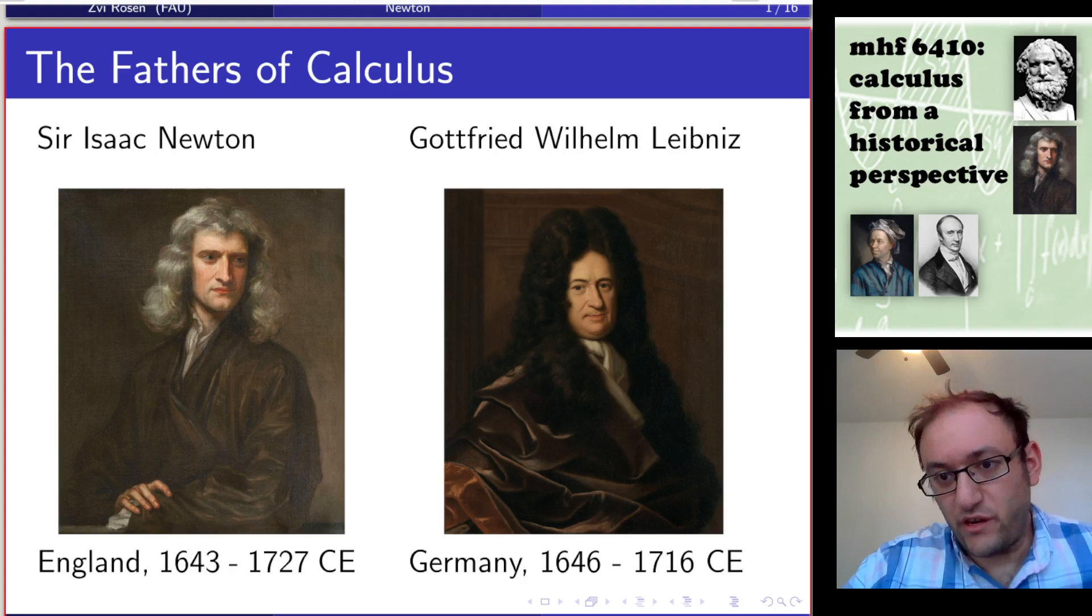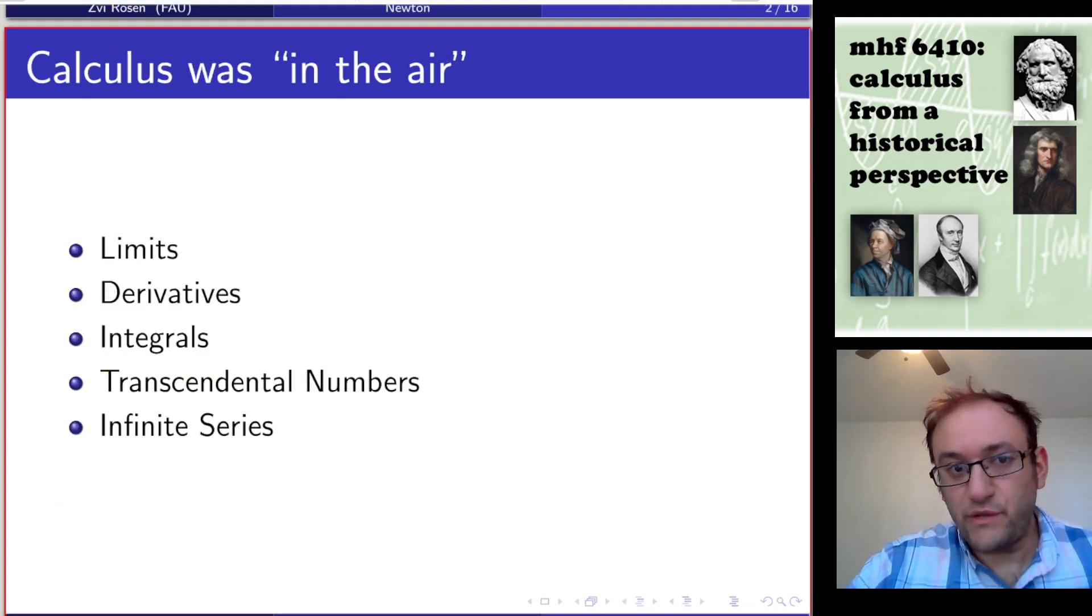But before we get into their invention of the calculus, it's important to remember what is it that we think of when we talk about calculus and how much of that did they actually invent. In an earlier lecture, we discussed different components of the calculus. Let's consider how much calculus was in the air when Newton and Leibniz arrived on the scene. There are limits, derivatives, integrals, transcendental numbers (numbers defined as limits), and infinite series. Those are the primary parts of the calculus as we think about it today.